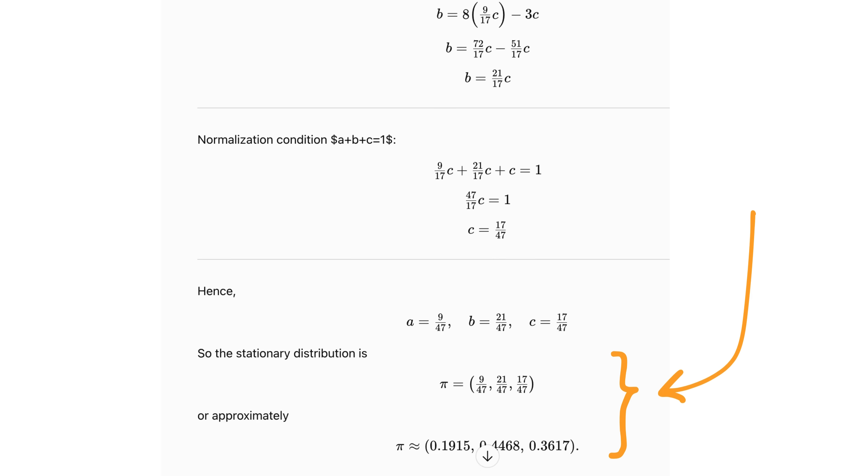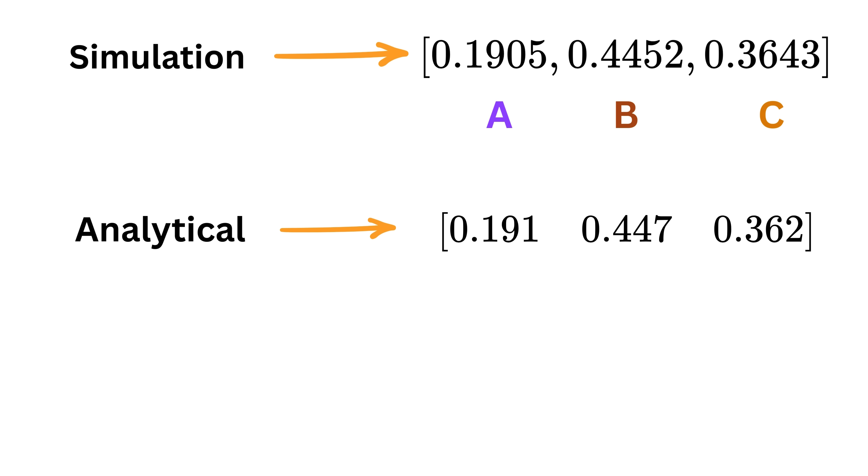This final distribution tells us how often, in the long run, the user will be on each of the pages. And by solving it this way, we can also check whether there are multiple stationary states. We just look for more than one linearly independent eigenvector with an eigenvalue 1. Isn't that awesome?